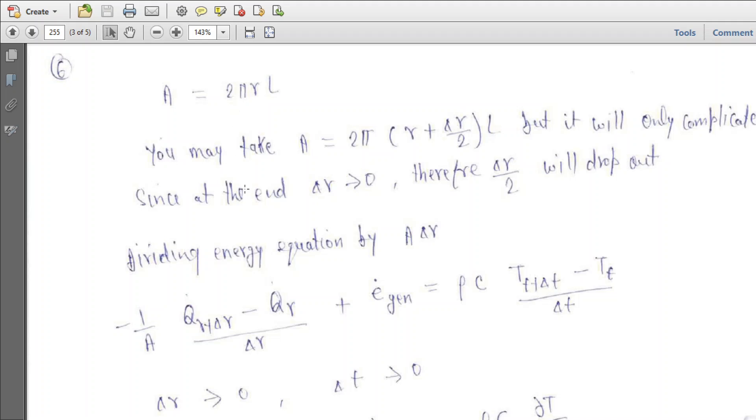Area is 2πRL. You may take area as 2π(R+ΔR/2)L, but when taking the limit as ΔR approaches zero, this complicates it. So we can take area as 2πRL only.